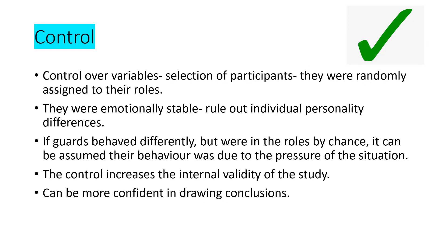A strength of the Stanford Prison Experiment was its high level of control. Participants were randomly assigned to roles and selected for emotional stability, which ruled out individual personality differences. Because the roles were chosen by chance, any differences in behaviour can be attributed to the pressure of the situation rather than individual personality. This increases the internal validity of the study and means we can be more confident in drawing conclusions.